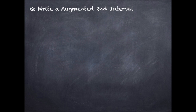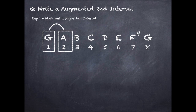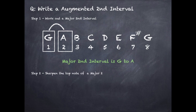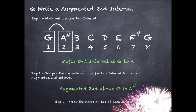Question: write an augmented second interval. Step one: work out a major second interval. We go from the first note of the G major scale to the second note of the G major scale. So a major second interval is G to A. Step two: sharpen the top note of the major second interval to create an augmented second interval, so A becomes A sharp. An augmented second above G is A sharp. Step three: stack the notes on top of each other on the stave.